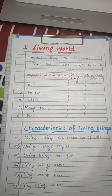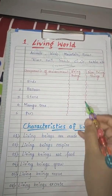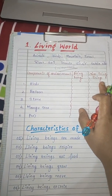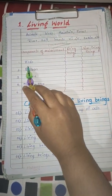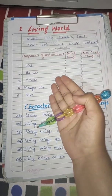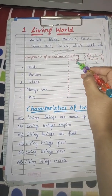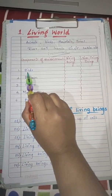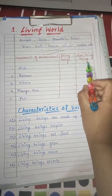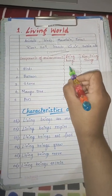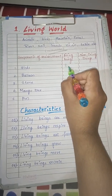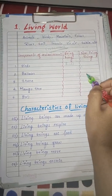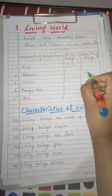As I told you, we see a variety of things around us. Some are living and some are non-living. Here I have a list of some things, and we have to classify them into living beings and non-living things. The first one is birds — birds are living beings. Next one, balloon — balloon is a non-living thing.